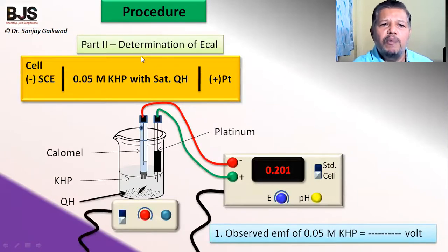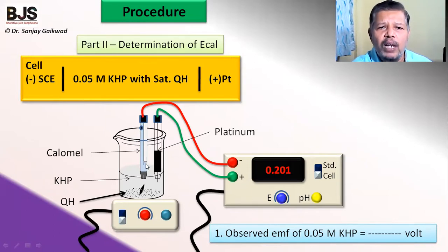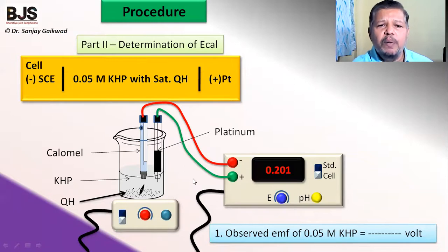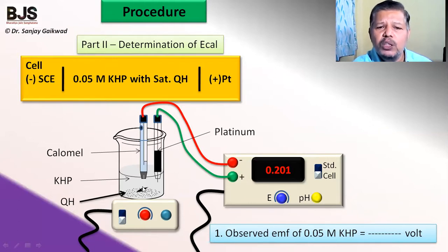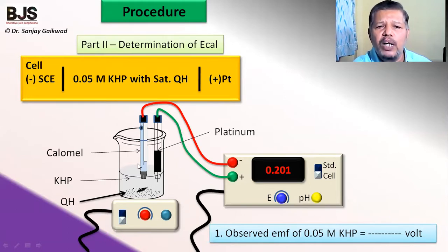The second part of the procedure is to determine E_cal because we are using the calomel electrode. We measure the potential of the calomel electrode using potassium hydrogen phthalate as a standard buffer solution. Take a beaker, add 0.05 molar potassium hydrogen phthalate solution, add quinhydrone powder, and stir to make a saturated quinhydrone solution. Then dip the calomel electrode and the platinum electrode to form a quinhydrone electrode, connected to the respective terminals.